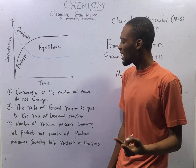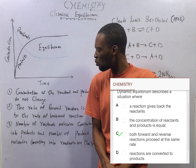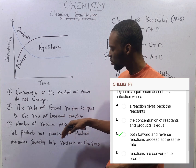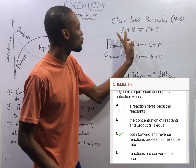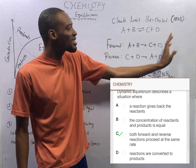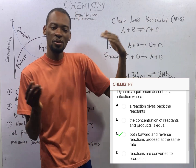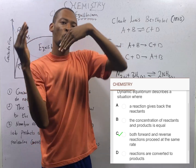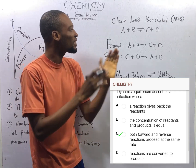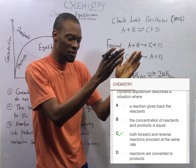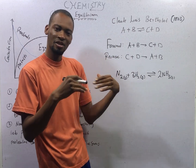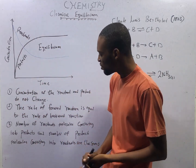Two: chemical equilibrium is a point where the rate of forward reaction is equal to the rate of backward reaction. Which means the rate at which the reactants are combining to form product is the same rate at which the products are also combining to form reactants. So the rate of forward reaction is the same as the rate of backward reaction — that point is referred to as chemical equilibrium.